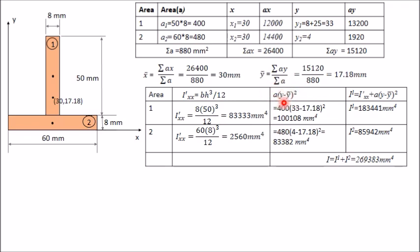We also need A(y − ȳ)² for the parallel axis theorem. For moment of inertia with respect to the x-axis, we use y and ȳ. For area one: A₁ = 400, y₁ = 33 mm, ȳ = 17.18 mm. Calculate A₁(y₁ − ȳ)² and add to Ī₁ to get the moment of inertia of area one about the centroidal axis.